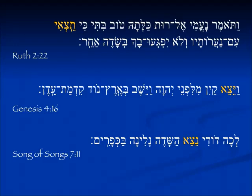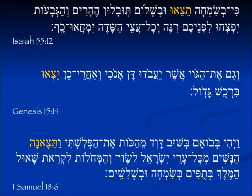In Song of Songs 7:11, 'we will go out' — 'L'cha dodi netzeh hasadeh' — come, my beloved, let's go out to the field, let's see if the flowers are blooming. From Isaiah 55:12, 'Tetze'u' — all y'all will go out with joy and be led forth with peace. In Genesis 15:14, from God's prophecy to Abraham in the dream — the people will go down to Egypt and afterwards 'yetzu berechush gadol' — they will come out with great treasure.